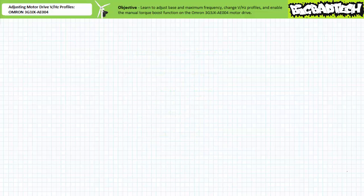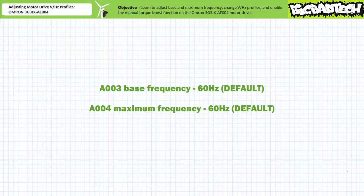Let's now learn to display the current entry and change the base and maximum frequency. Extended function parameter A003, base frequency, is user adjustable from 30 hertz to the current maximum frequency entry A004, currently set at the default 60 hertz.